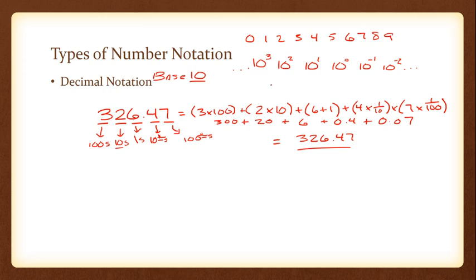Each place value is more powerful than the next: 10⁰ is 1, 10¹ is 10, 10² is 100, 10³ is 1,000, and so on. Base 10 is what normal everyday math is based on — 10 digits, each representing a different place value.